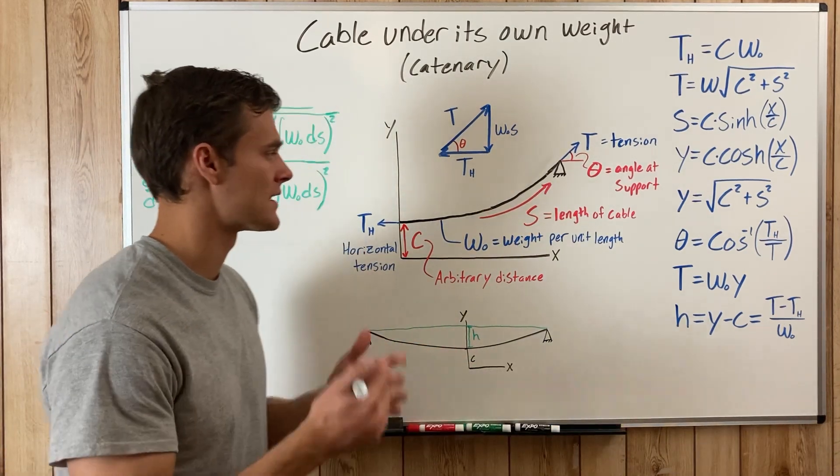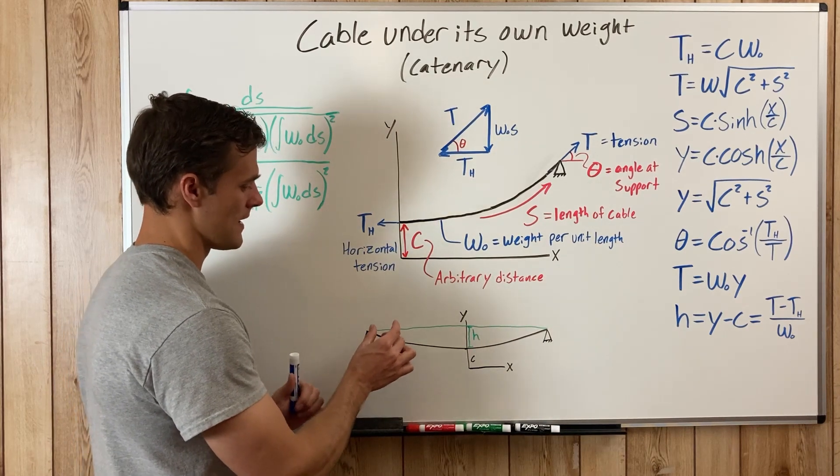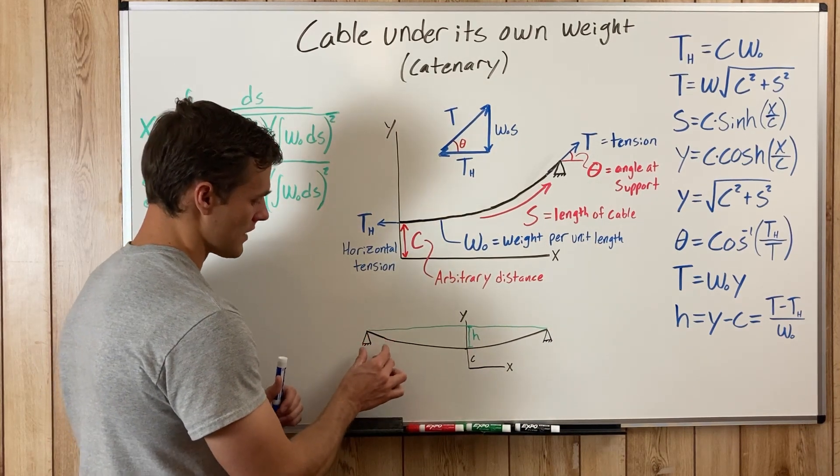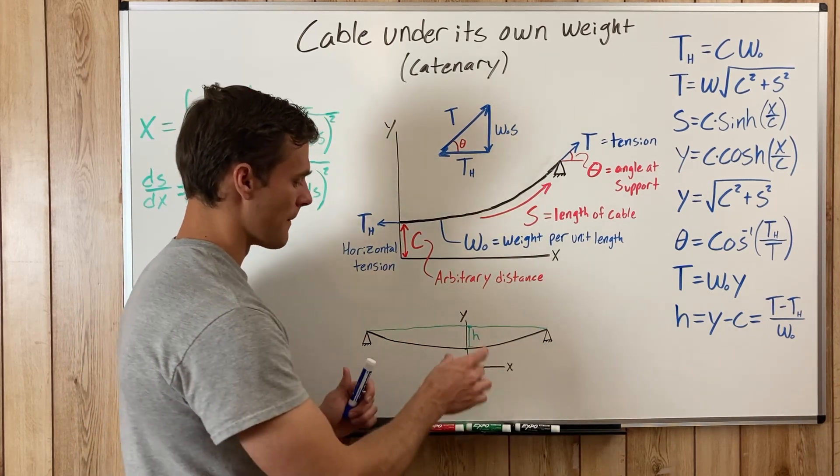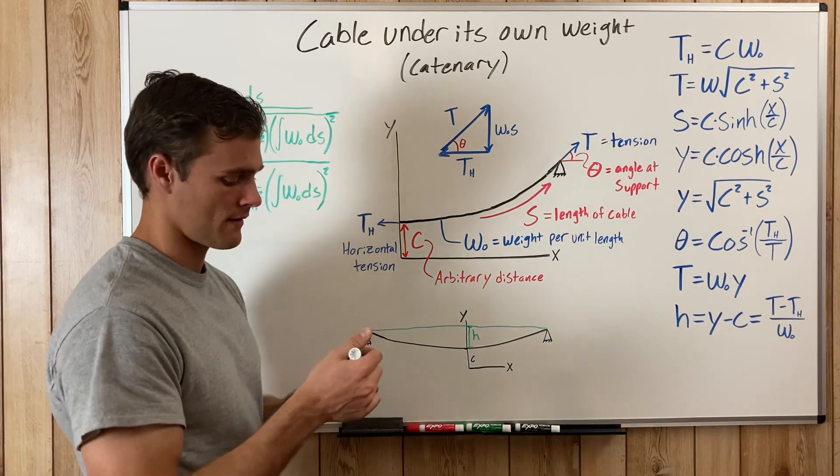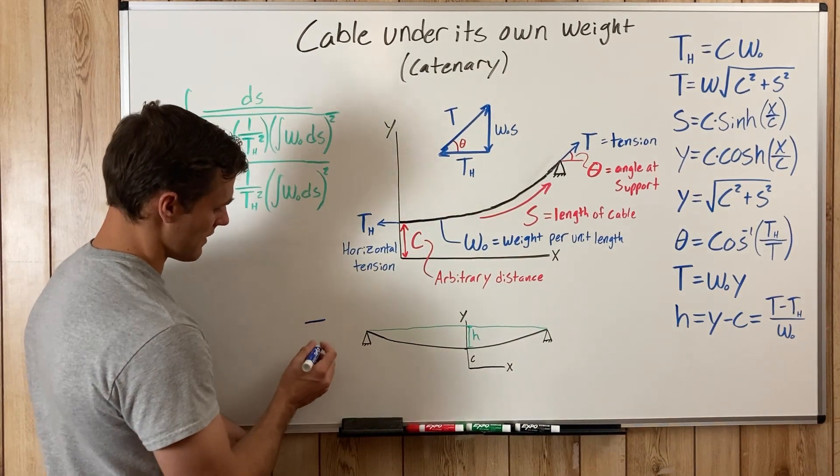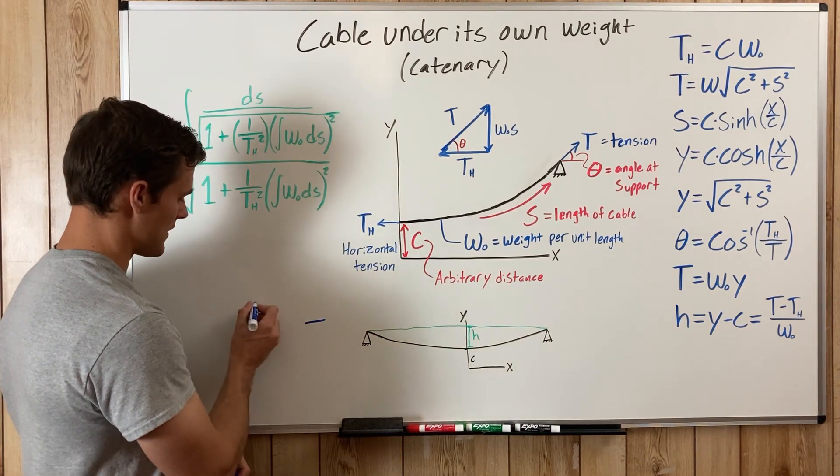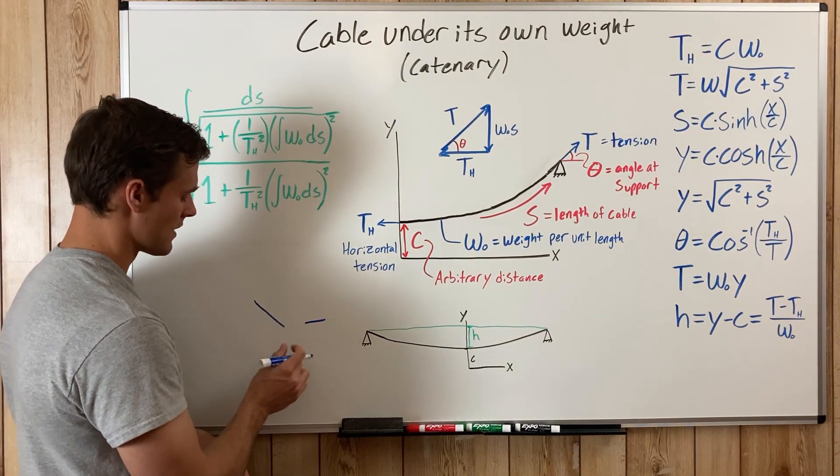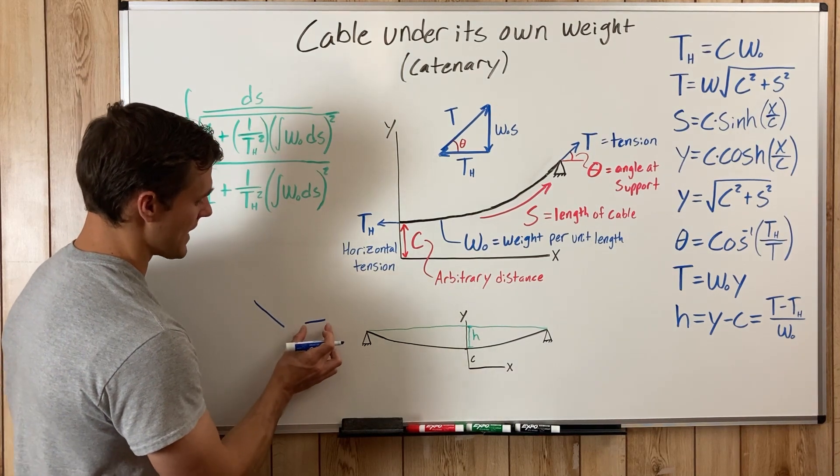The reason you have to analyze it differently is because at any given span along a distributed load, the weight pulling down is the same. But with a catenary load, you might have one segment in the middle that is horizontal and at the end you might have something more like this—their horizontal span is about the same.